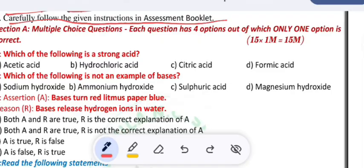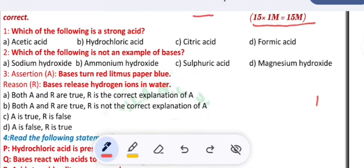Write neatly and legibly. Carefully follow the given instructions in assessment booklet. Section A: multiple choice questions. Each question has four options out of which only one option is correct. 15 questions are given. For each correct answer one mark will be awarded, so on the whole 15 marks one can expect from this section.